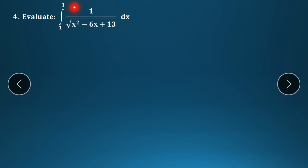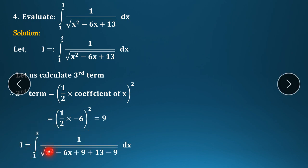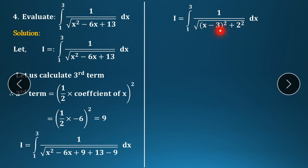Fourth example: evaluate integration from 1 to 3 of 1/√(x² − 6x + 13) dx. First step: I equals the given expression. Calculate the third term: coefficient of x is −6, so third term = (1/2 × (−6))² = (−3)² = 9. So the third term is 9.